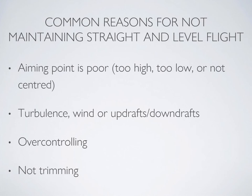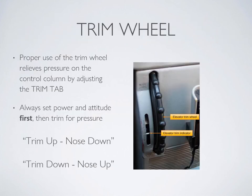So what's trim? The trim wheel is your best friend, or at least it's going to be if you learn how to use it properly early on - it's going to do most of the work for you. If you haven't set your trim properly, you're going to be fighting the aircraft, distracted and unable to divide your concentration. Always set the power and the attitude first, then trim. Do not try to fly the aircraft by moving the trim wheel. Always move the yoke to where you want the aircraft to fly, feel the pressure in the yoke, and then trim to relieve that pressure.